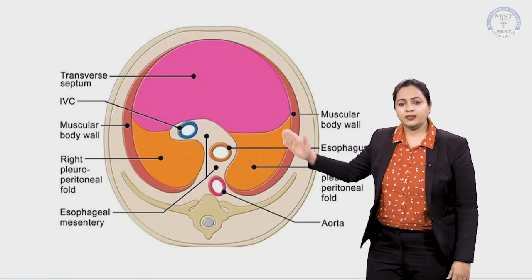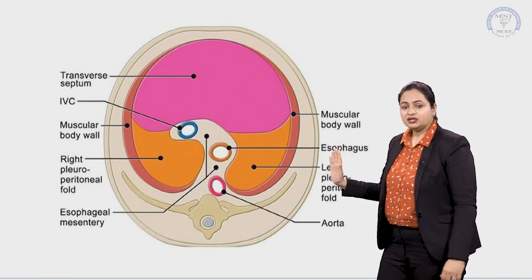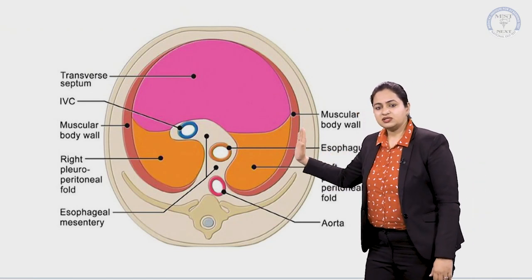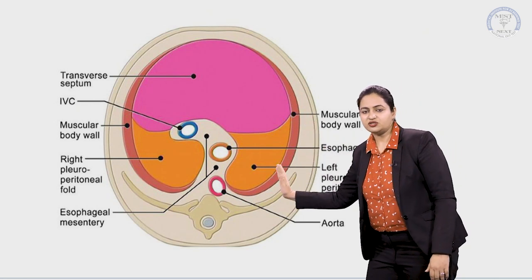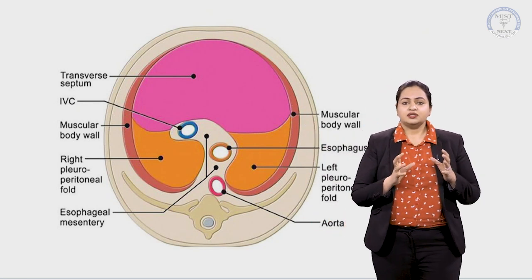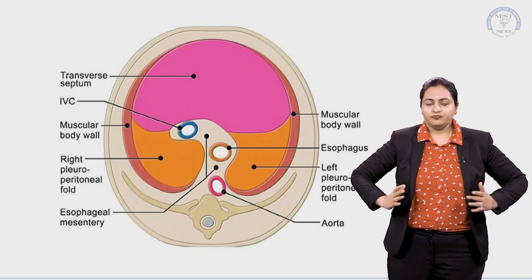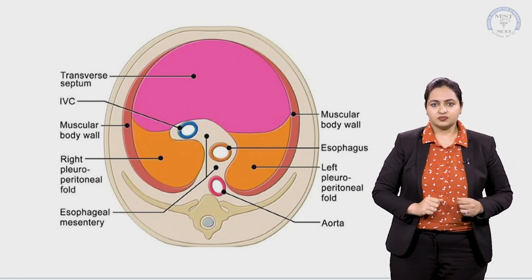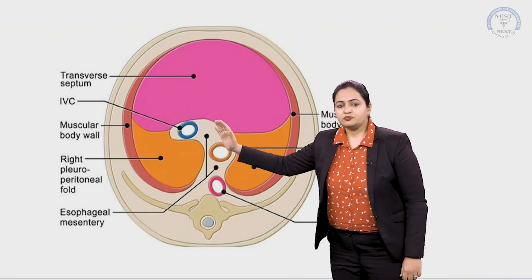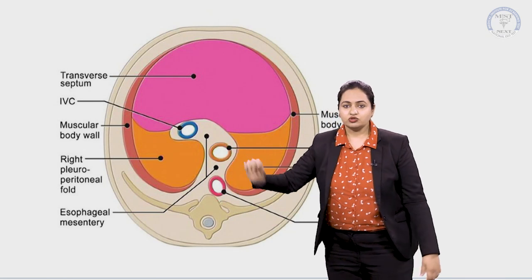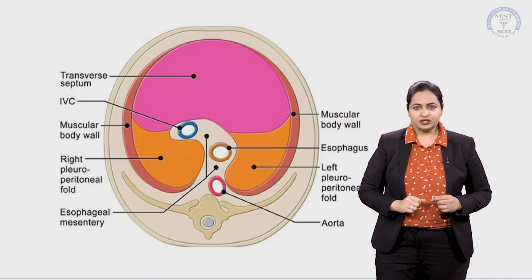These are the two major components forming the diaphragm. There is also a slight contribution from the lateral side — this is the mesoderm of the lateral body wall, contributing from the lateral aspect. Then there is a contribution from the posterior side, this tail-like contribution, which is given the term the mesentery of esophagus.